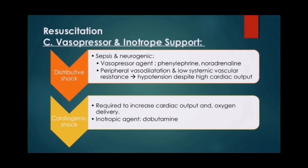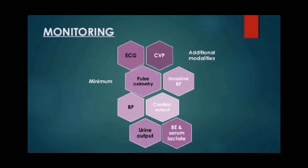Vasopressor or inotropic support is used in distributive shock such as sepsis and neurogenic shock. Vasopressor agents like phenylephrine and noradrenaline are preferred when vasodilation and low systemic vascular resistance lead to hypotension despite high cardiac output. Cardiogenic shock requires inotropic agents like dopamine to increase cardiac output and oxygen delivery. Additional monitoring modalities include ECG, pulse oximetry, and invasive blood pressure. Minimum monitoring includes blood pressure, cardiac output, urine output, and serum lactate.